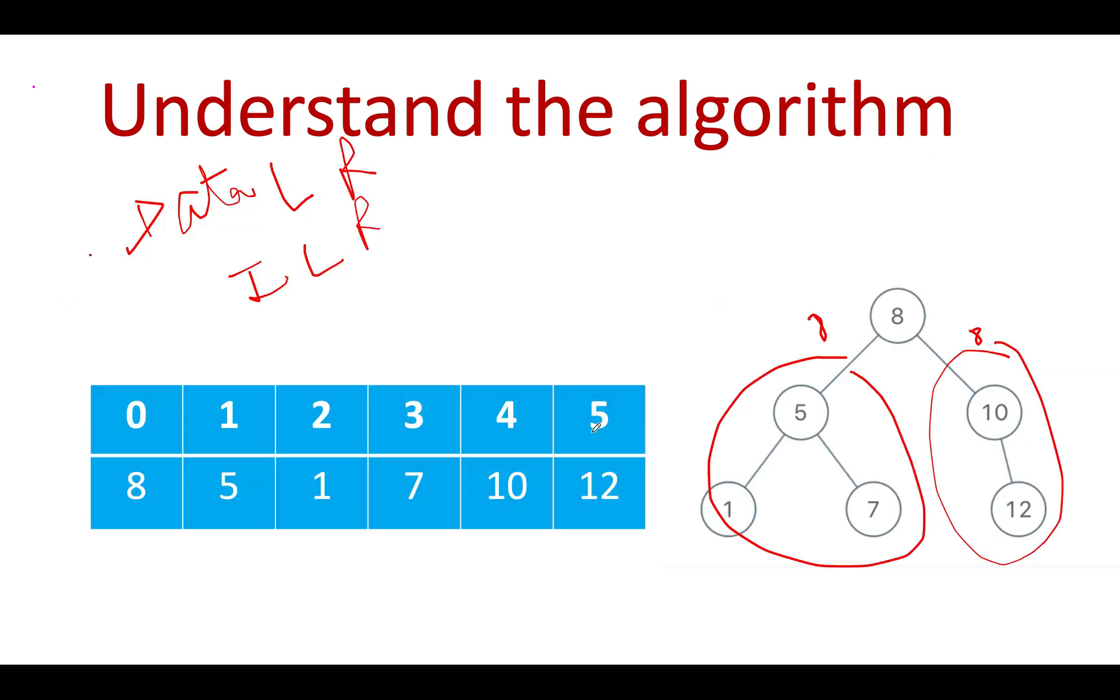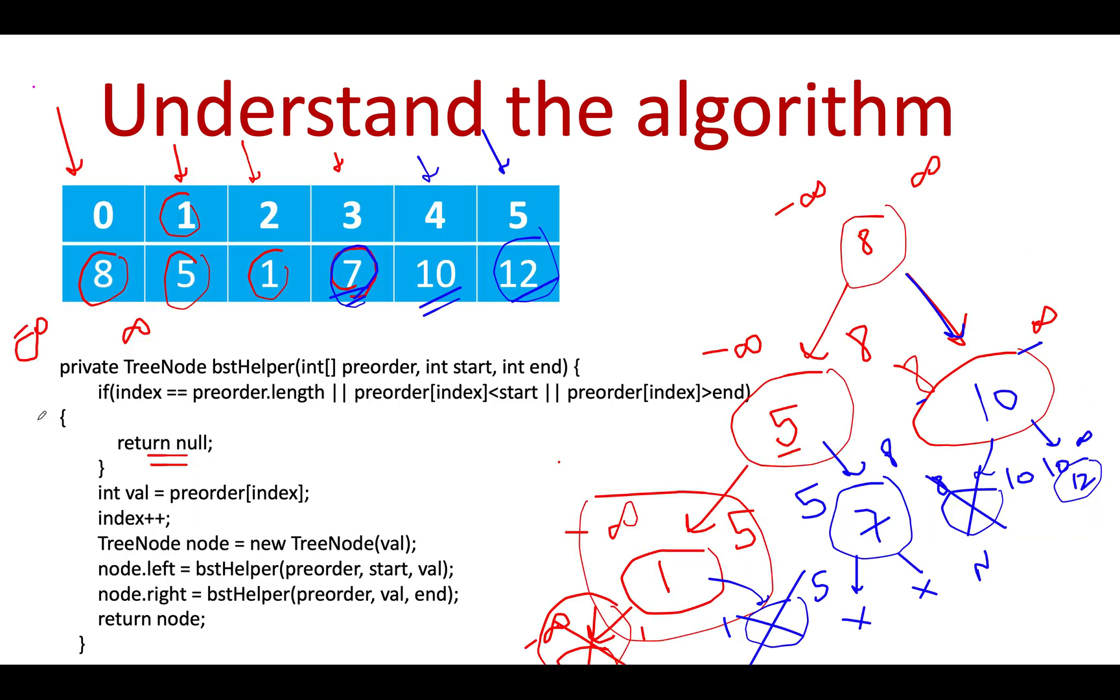I've written the pseudo code here. Please feel free to go through it, although I'll be telling the same code in the coding section. The time complexity of this approach is order of n because you're iterating across each node only once. The space complexity is height of the tree, which is order of h or you can say log n.